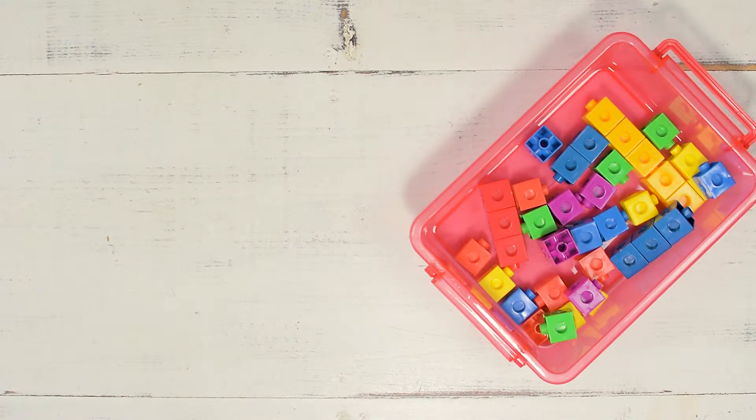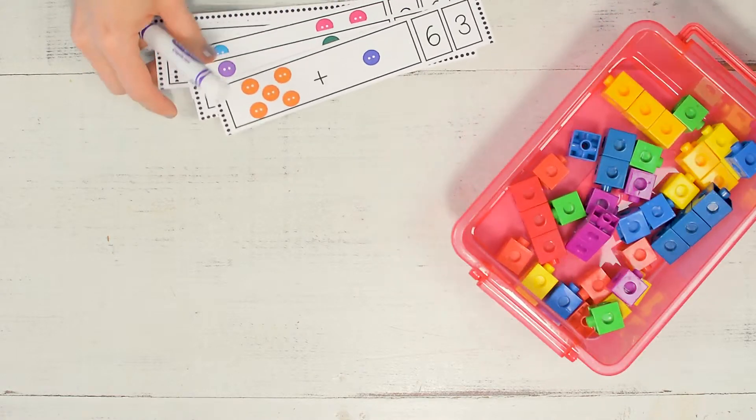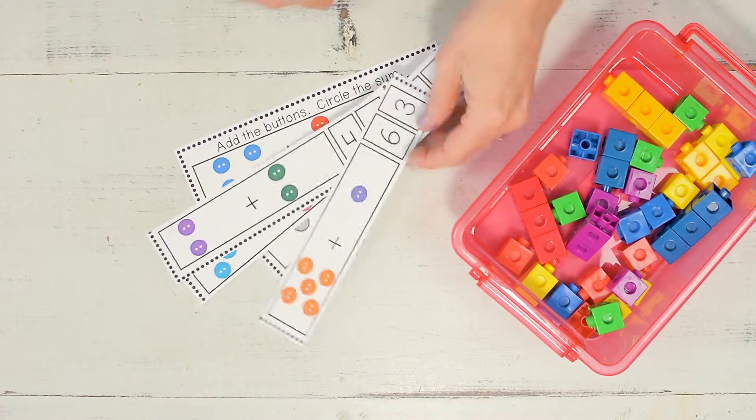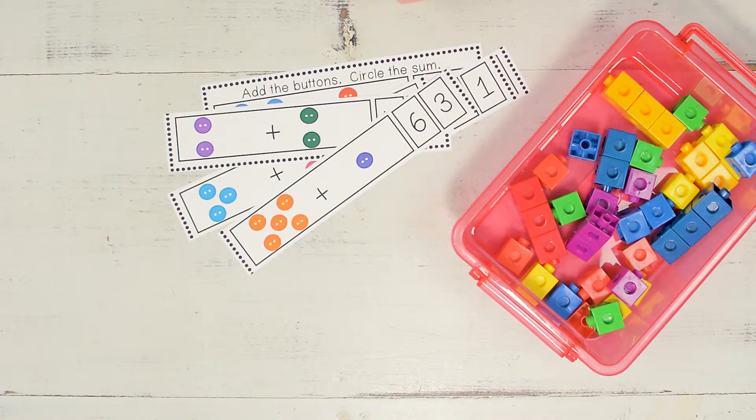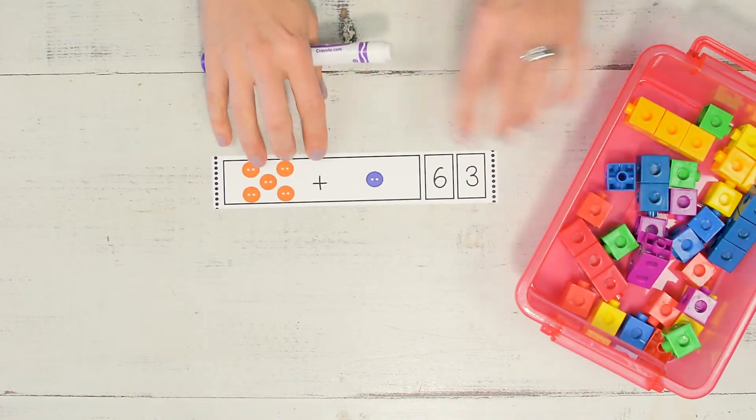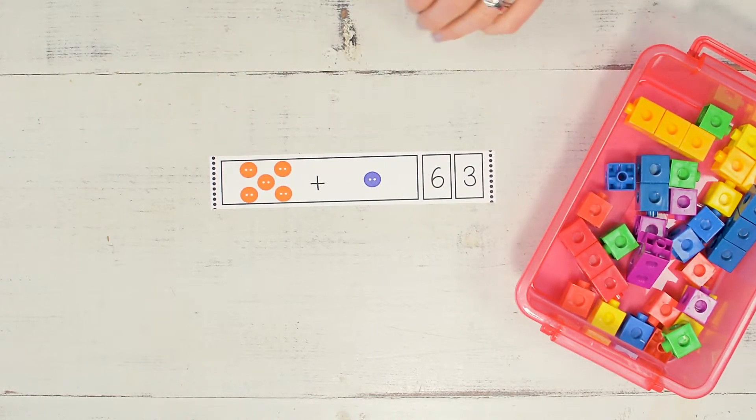All right, so if you notice I have a bin of really fun snap cubes and this time I went ahead and cut out the button activity so it's a little bit easier to use. For this one, I'm going to build the addition problem using my snap cubes.